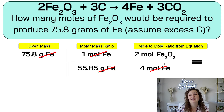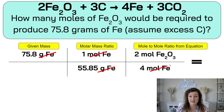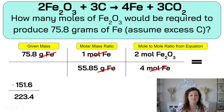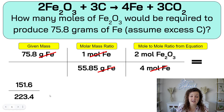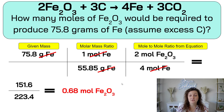That's exactly what we want. Now we do the math. Multiply the top, multiply the bottom, and then divide your two answers. So I'm doing 75.8 times 1 times 2, getting 151.6. Then multiply the bottom: 55.85 times 4, getting 223.4. Then divide these — make sure the top number goes in your calculator first — and you end up getting 0.68 moles of Fe₂O₃.